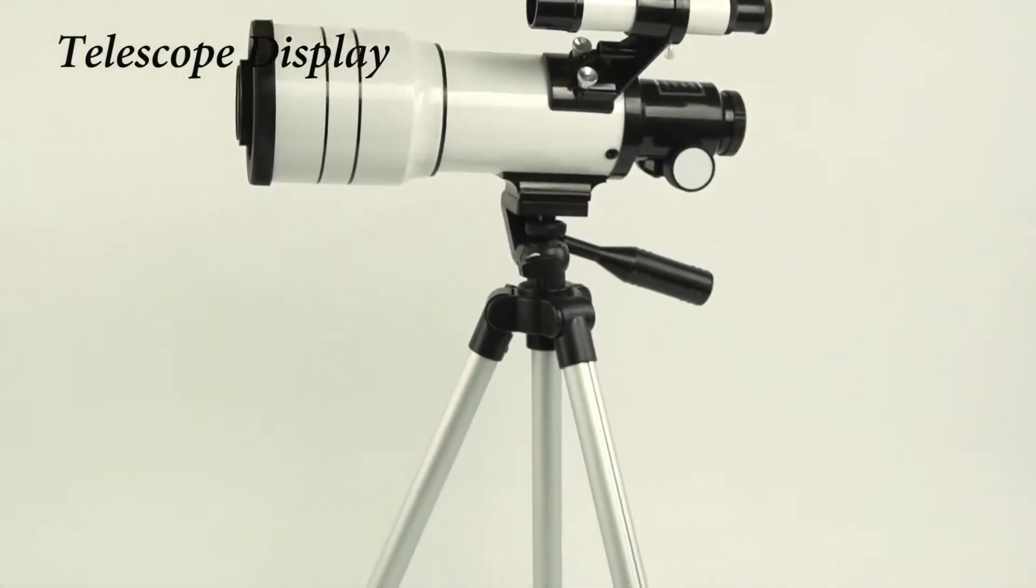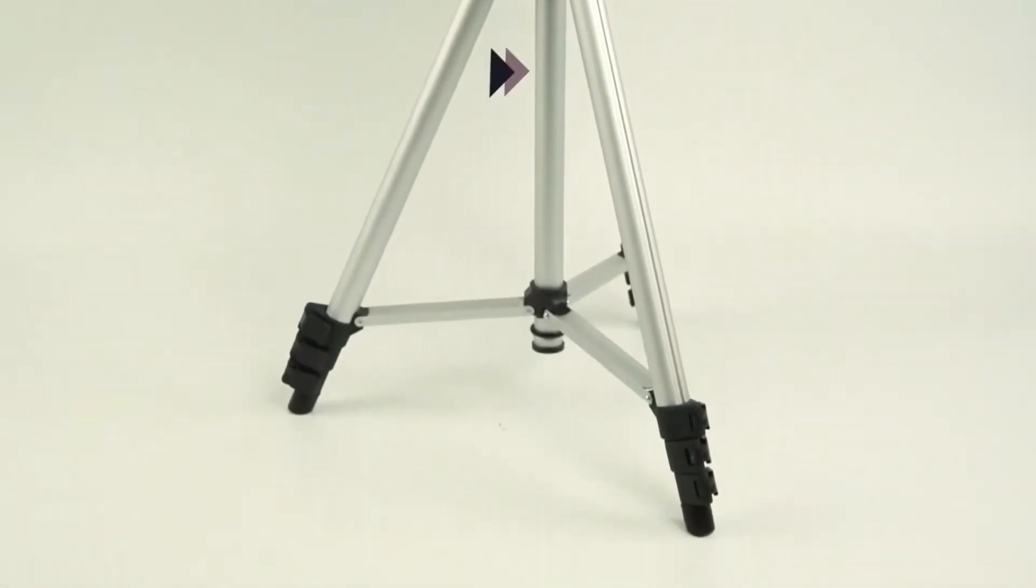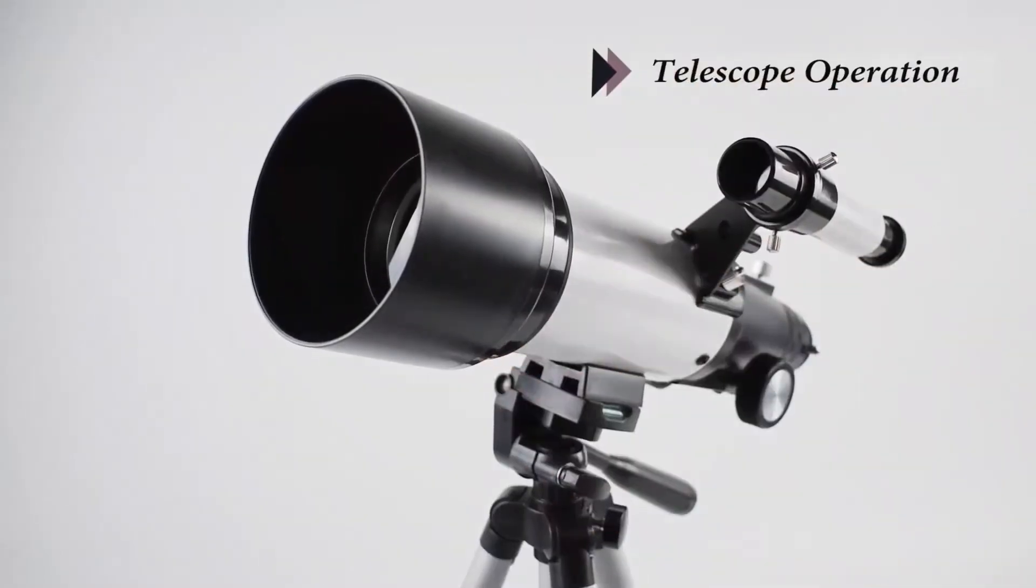After installing the telescope, remove the dust cover at both ends of the diagonal mirror, eyepiece, finder scope, and the telescope main tube.